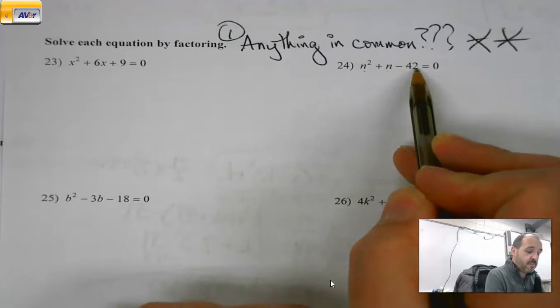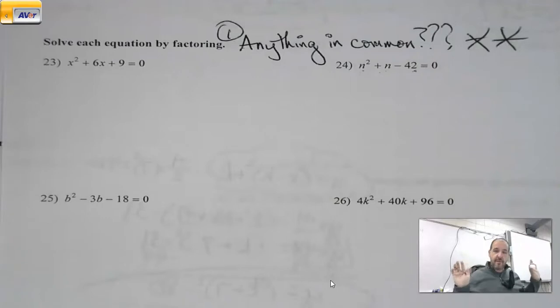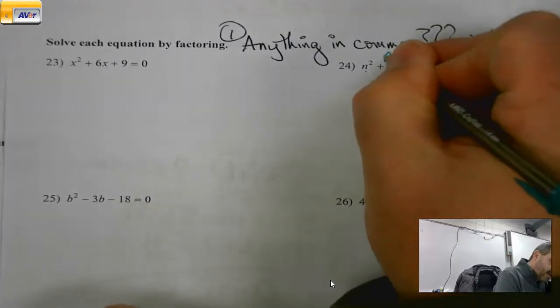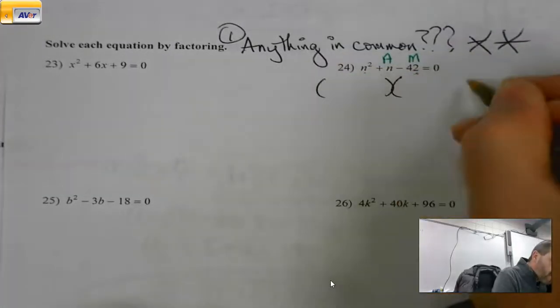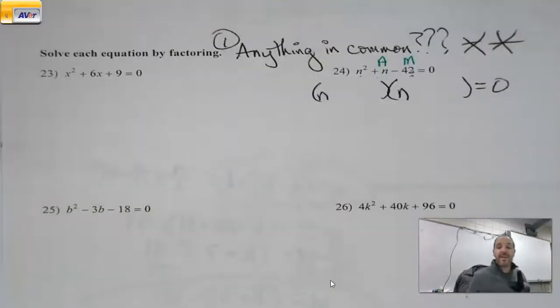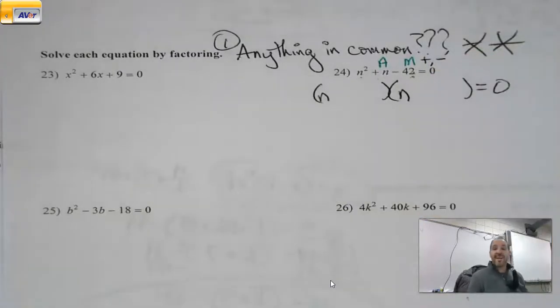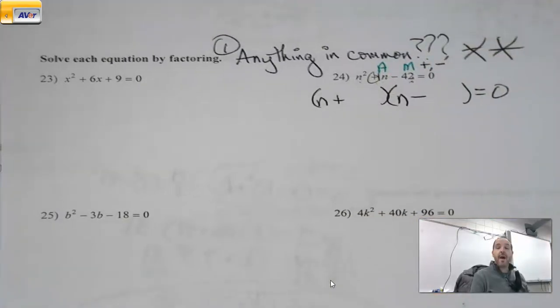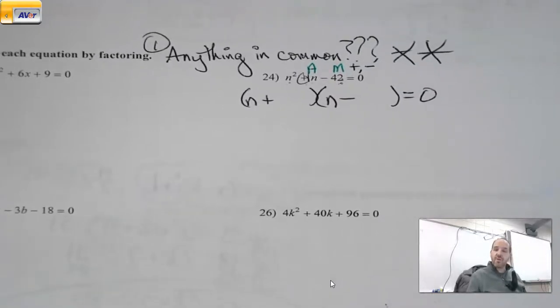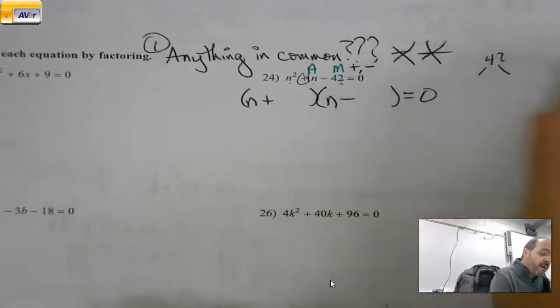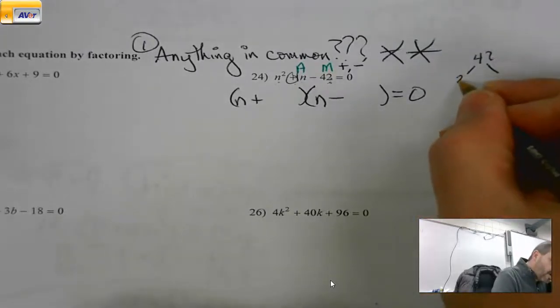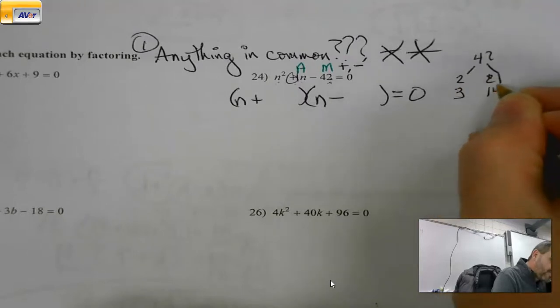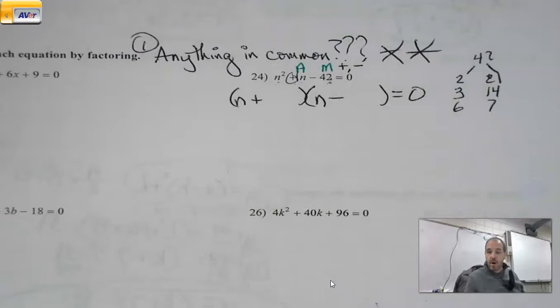Now with the Hardy mini lecture out of the way, let's do number 24. All three terms do not have N. No number divides in. I did my due diligence. Nothing's in common. There's no number in front of N squared. So multiply and add. My clues are there for the taking. My multiply number is negative, I need one of each sign. My add number is positive, which means the bigger number is going to be positive.